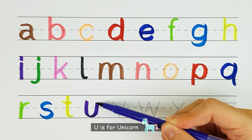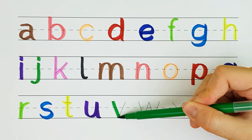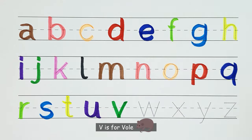U. U is for unicorn. U. V. V is for vulture. V.